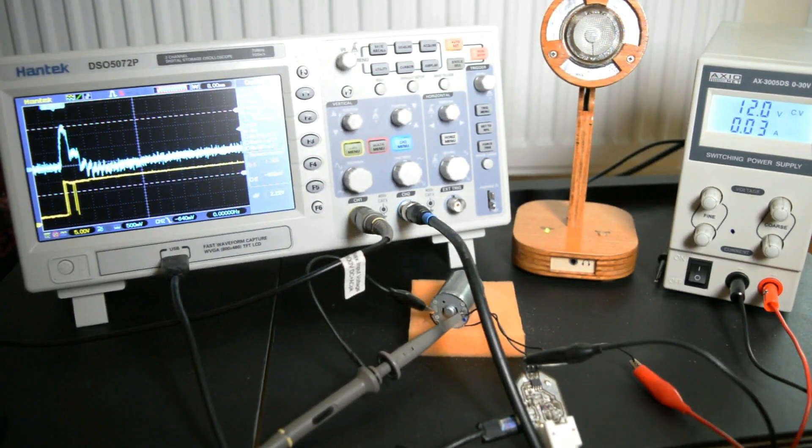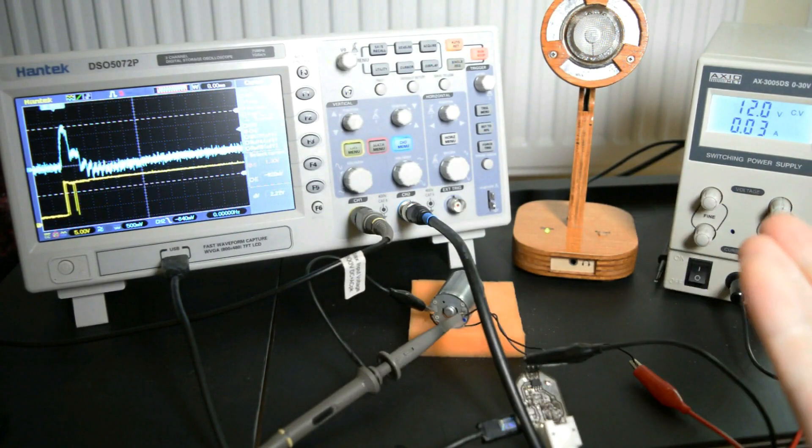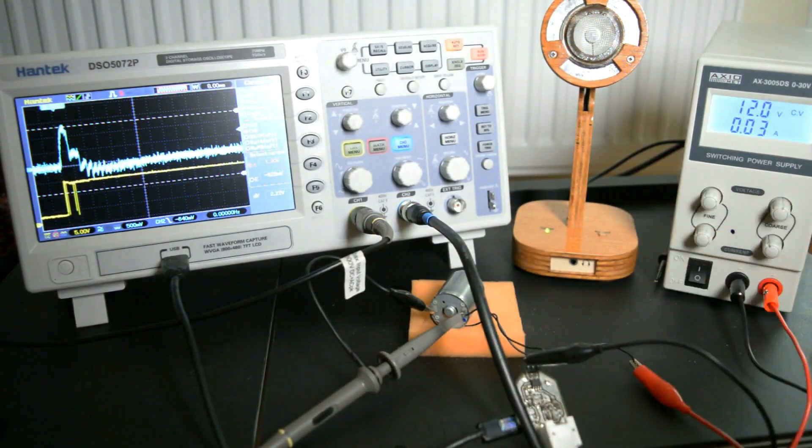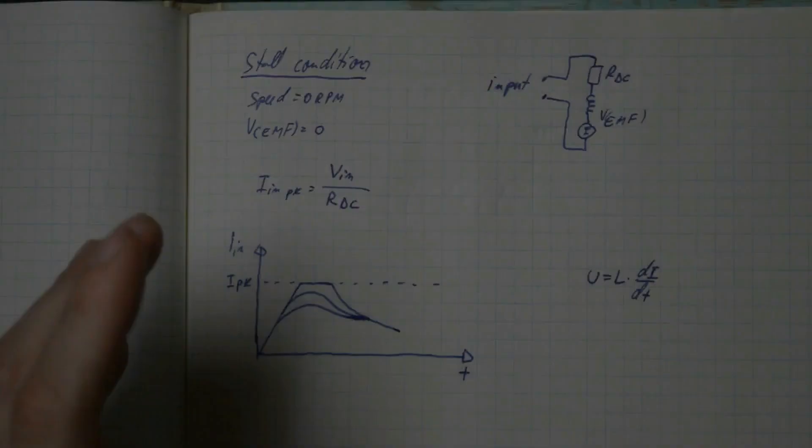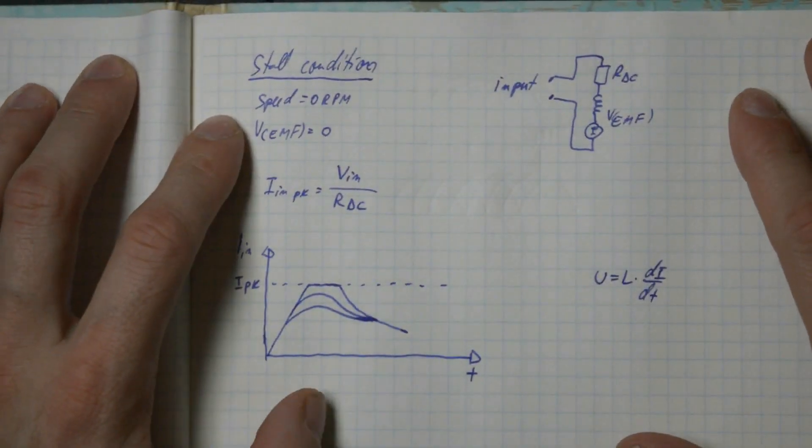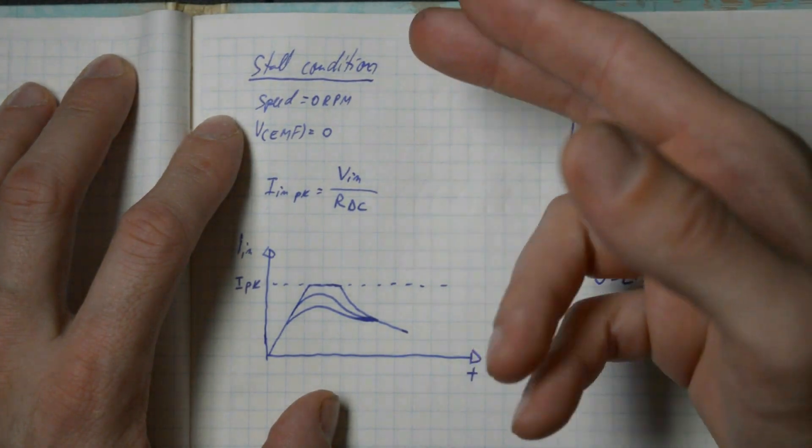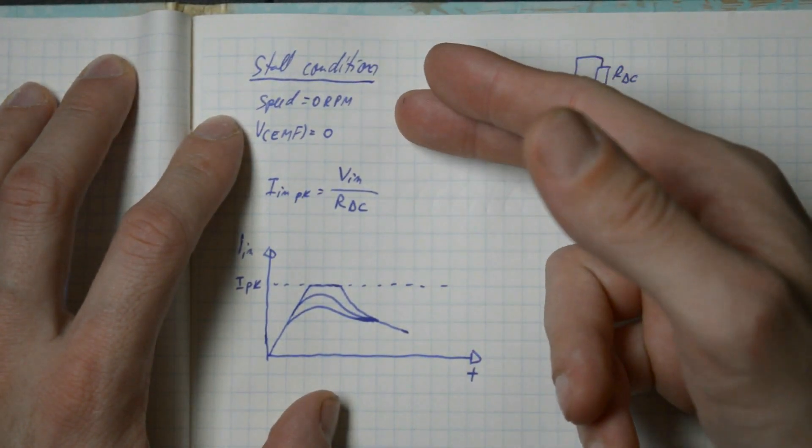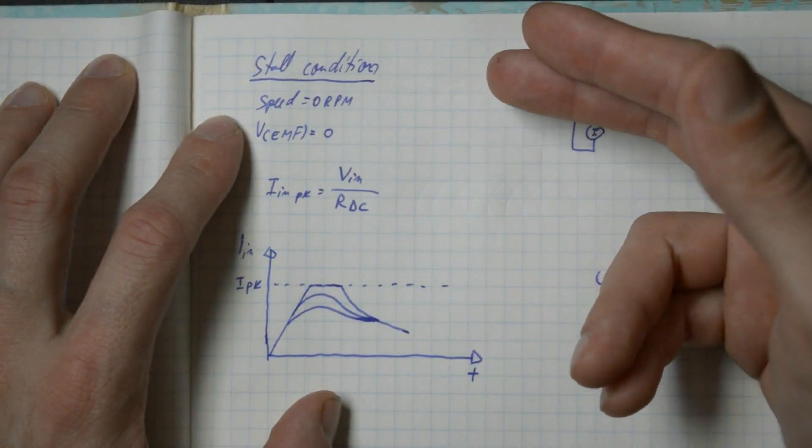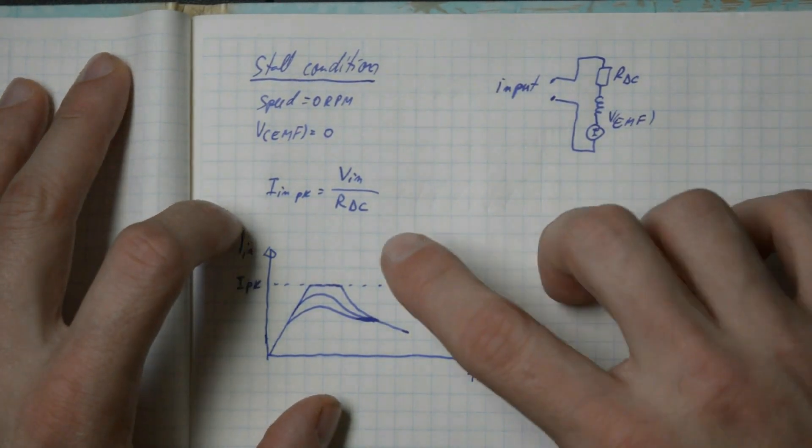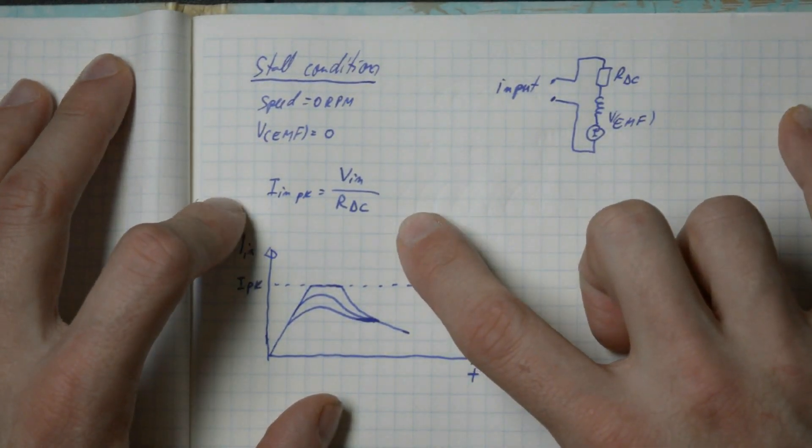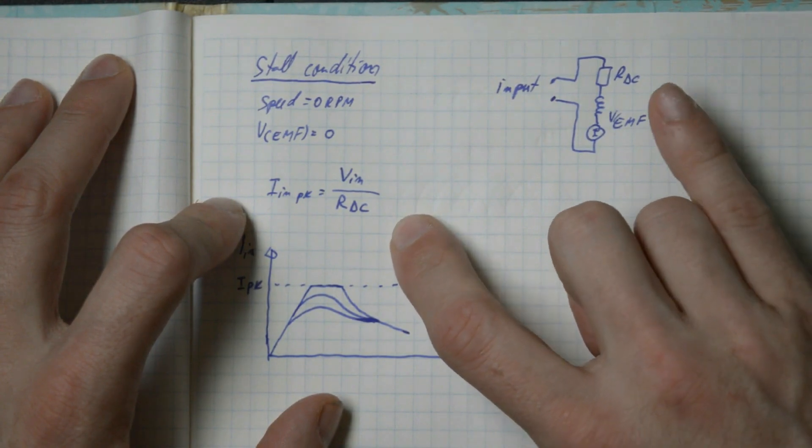Now you may be wondering, is this current realistic? I mean, why is it so large? Well, actually, this initial inrush current is the motor stall current. This current is coming from the DC resistance of the coil. Basically, in stall condition, when the speed is zero, the motor is not rotating, the EMF voltage is also zero. So the only thing limiting our input current is the DC resistance of the motor.